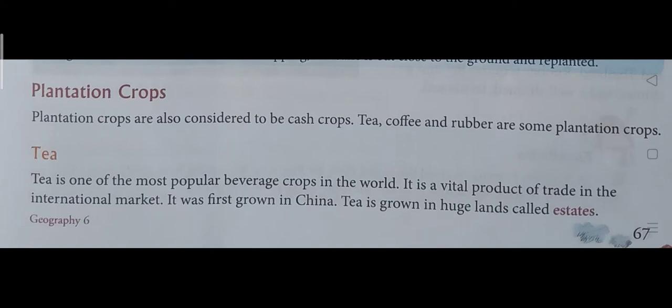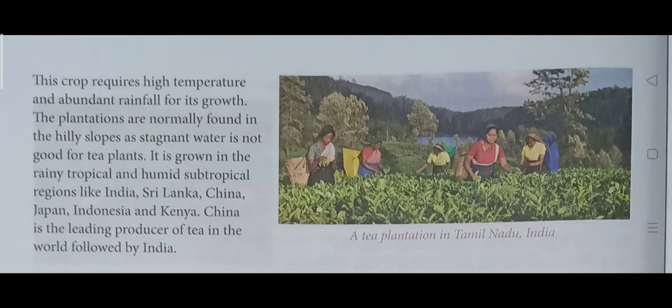Plantation crops are also considered cash crops; tea, coffee, and rubber are plantation crops. About tea: tea is one of the most popular beverage crops in the world and is a vital product of trade in the international market. It was first grown in China. Tea is grown in huge lands called estates. This crop requires high temperature and abundant rainfall for its growth. The plantations are normally found on hilly slopes, as stagnant water is not good for tea plants.